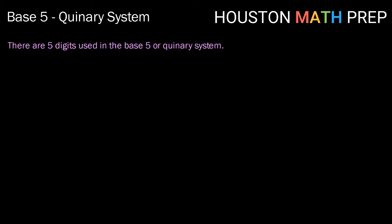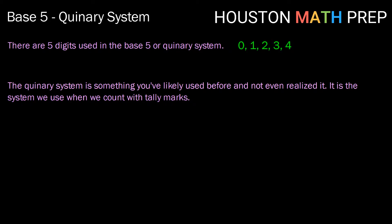There are five digits used in the base 5 system, and they are the numbers 0, 1, 2, 3, and 4. That means that all numbers in this system can be made up using only these digits. The quinary system is something you've likely used before, but not realized that that is what you were doing. It's the system that we use when we count with tally marks.